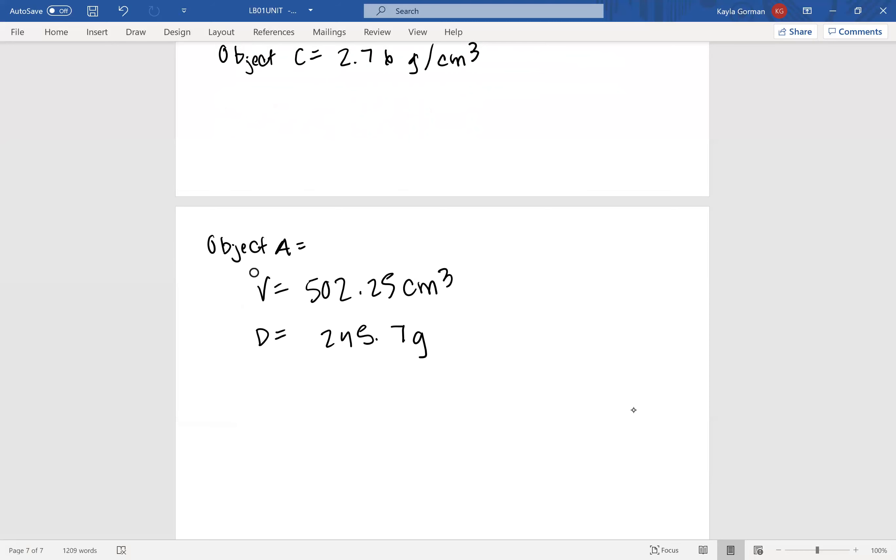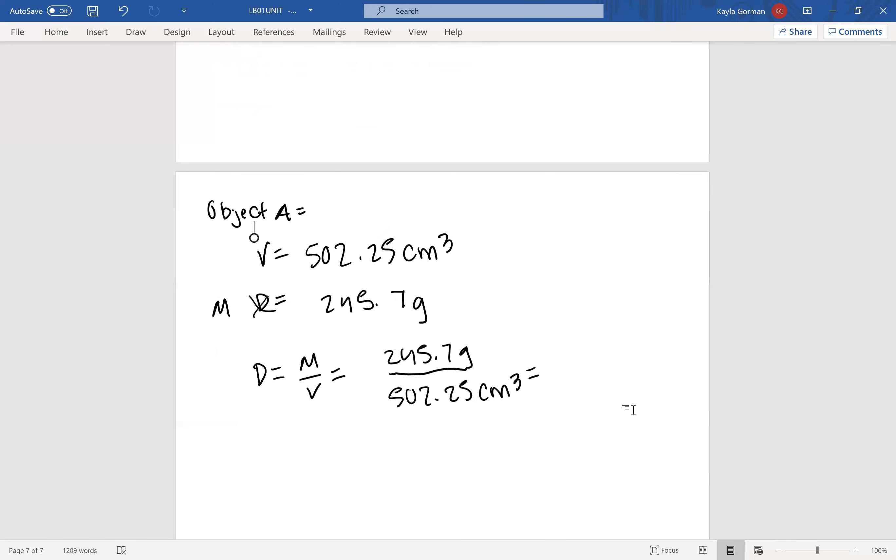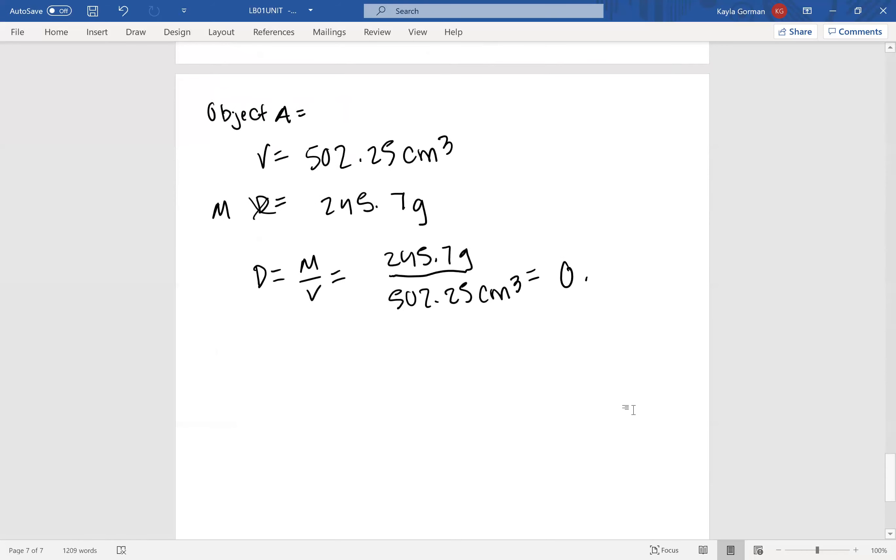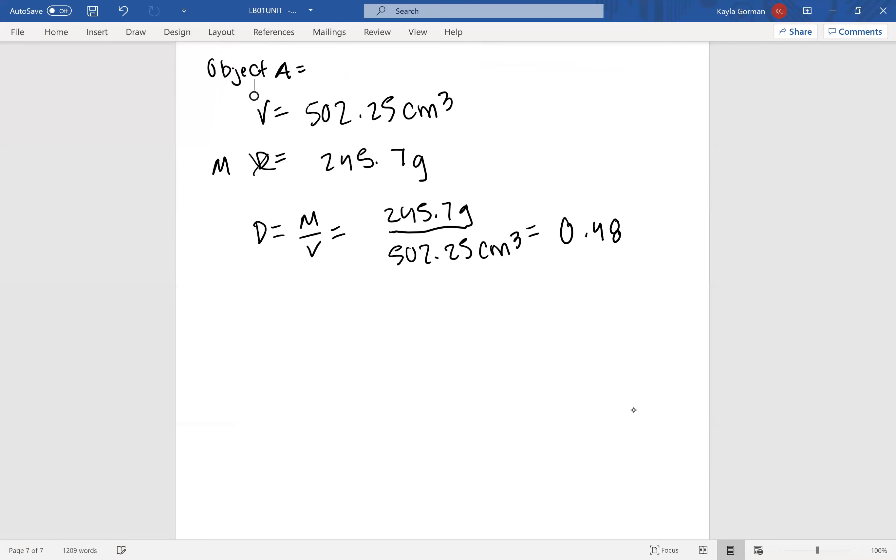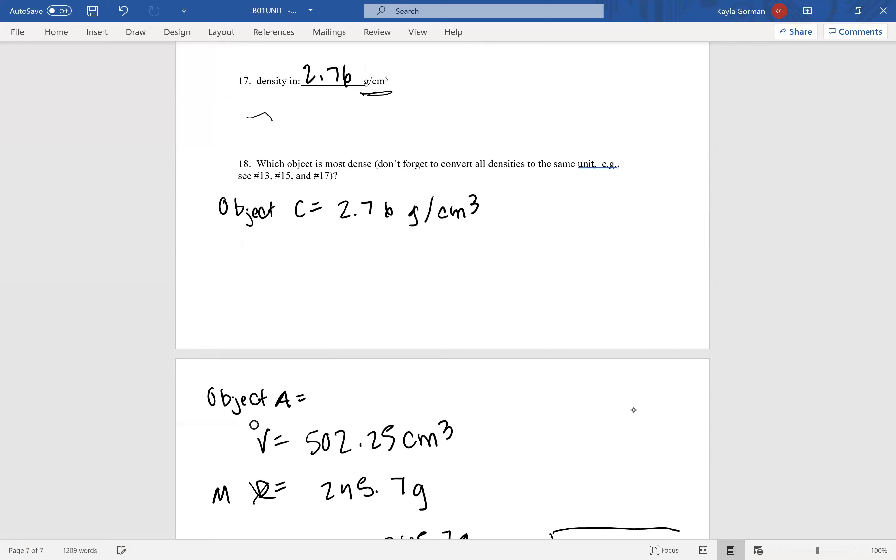And remember we're trying to find density, and density is just mass over volume. So all we do is do 245.7 grams over the 502.25 centimeters cubed and we're going to get 0.489 grams per centimeters cubed. And now we have that in the same units as Object C. Now these are comparable.